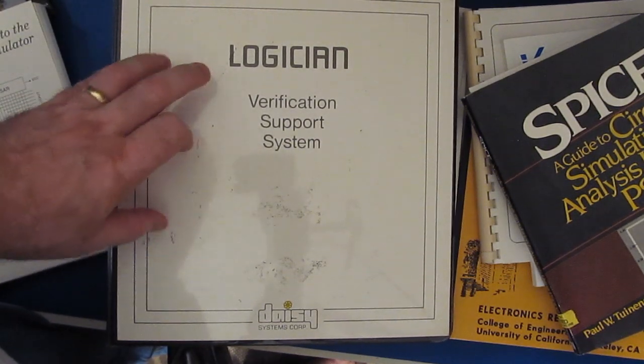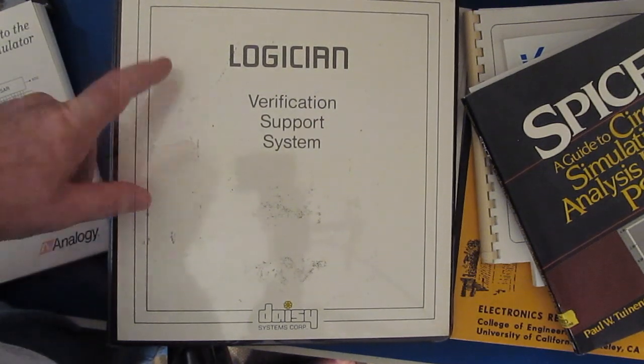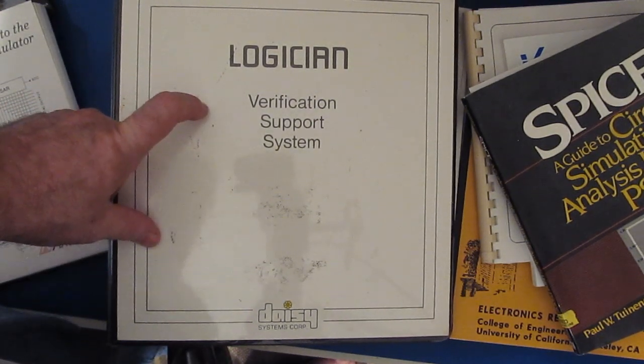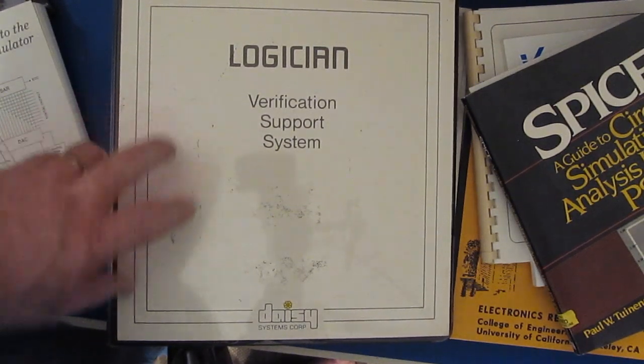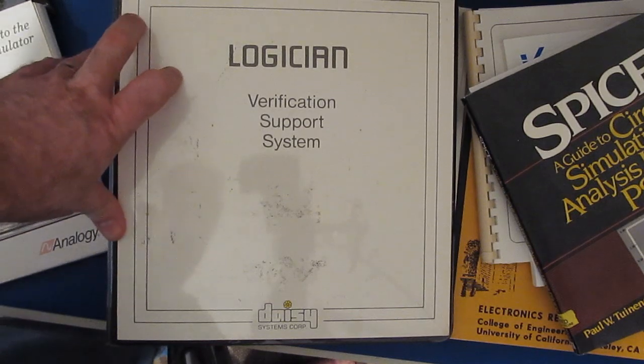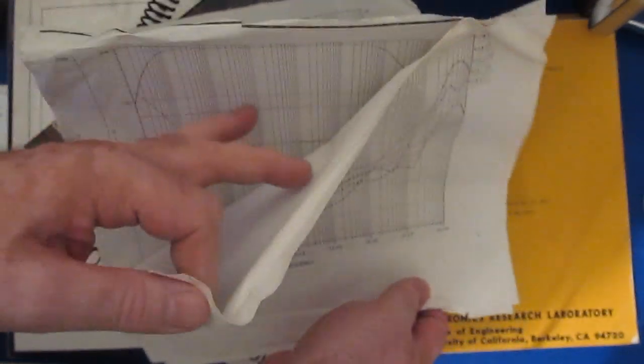You could actually take that IC and use that as part of your model. It was very advanced for its time. Later on they actually had simulators that would run on the PC. That probably came around about the time that IBM released the IBM AT. This is a printout of a simulation I ran. What's interesting about this is this is not a laser printer. It had rolls of paper and you would tear these things off as it would come out.